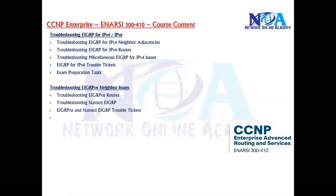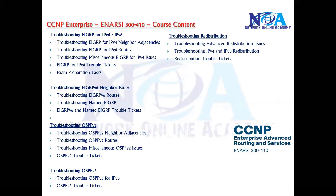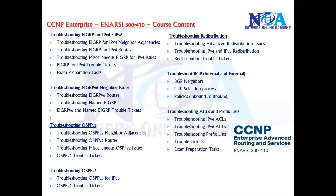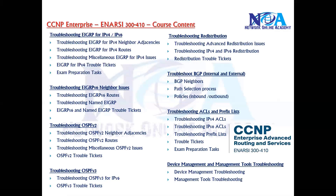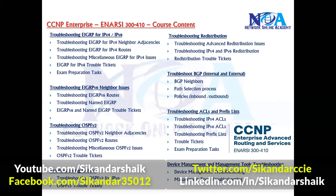For IPv6 troubleshooting, there's not much difference from IPv4 since the protocol behavior is the same. We also cover OSPFv2 for IPv4 and OSPFv3, troubleshooting redistribution, BGP troubleshooting, and troubleshooting access lists, prefix lists, and route filtering methods. Finally, we cover troubleshooting management tools and services. This is the content overview for the CCNP Enterprise Advanced Routing and Services paper — there's a lot of content we'll be covering.